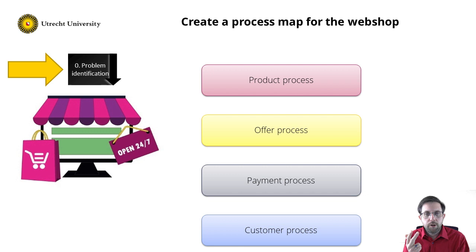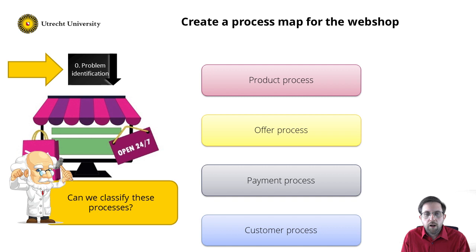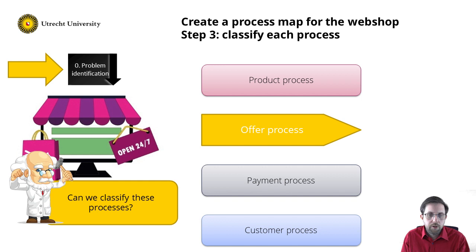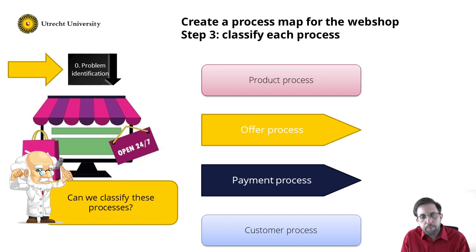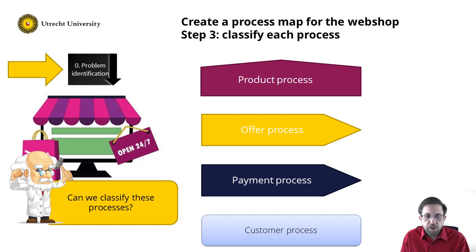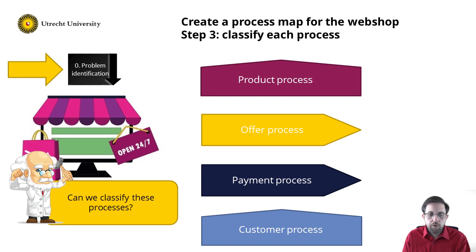So we have four processes: the product process, the offer process, the payment process, and the customer process. Can we classify these into the three classes? The offer process is a core process — a webshop would not survive without processing offers. Similarly, the payment process is a core process — without invoices being paid, the webshop would go bankrupt. The product process supports the offer process: if products become unavailable, they cannot be offered to customers — so it is a support process. And the customer process is triggered by the payment process — if customers do not pay, they get blocked — it does not directly add value, so it is also a support process.